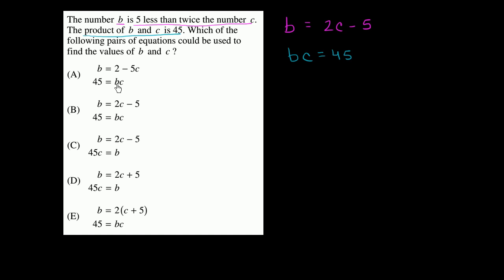So let's see. This one we have 45 is equal to bc, 45 is equal to bc. So these are contenders. This one has 45c is equal to b. Well, this is a different equation. If you divided both sides by c, you'd have 45 is equal to b over c. So we can knock this one out.